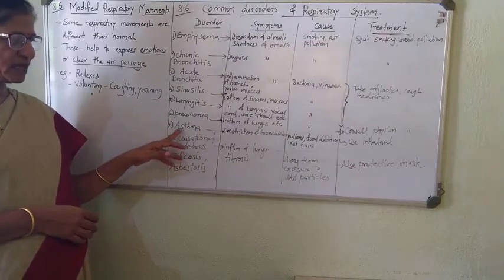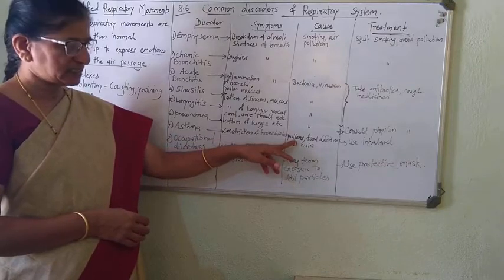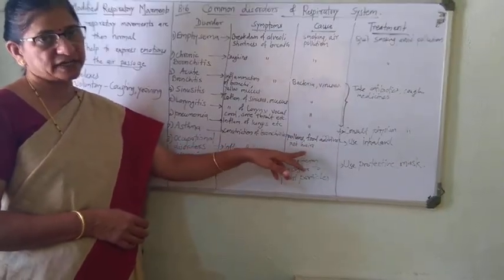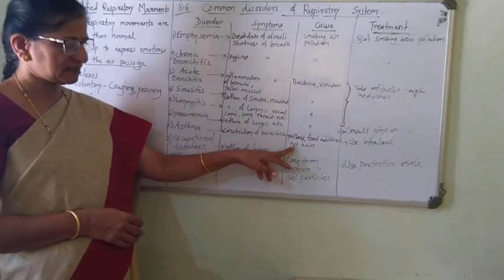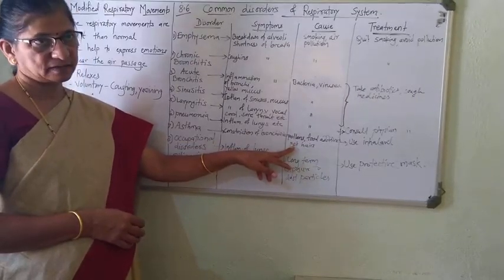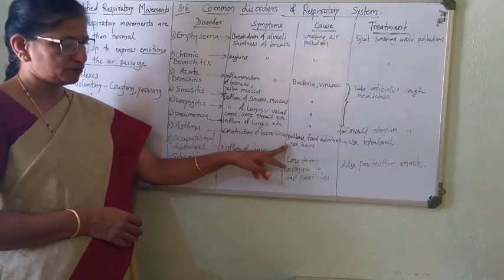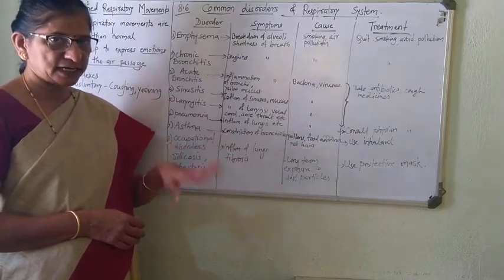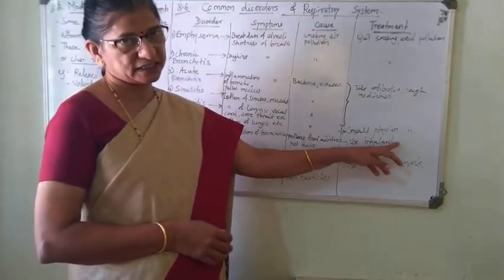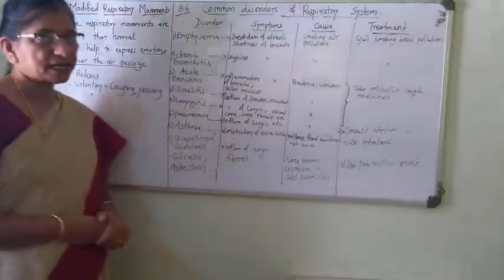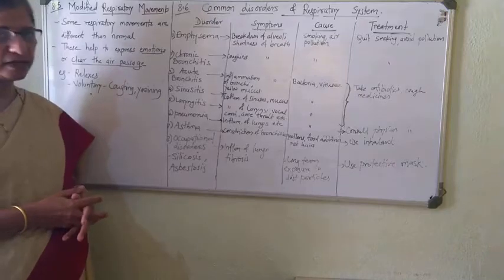Next is asthma, which means constriction of the bronchioles. Causes include pollen grains, food additives, or pet hairs — for example, cat or dog hair that falls in the house and gets inhaled into the respiratory system can trigger asthma. The treatment is to use inhalants, which is the pump inhaler you are familiar with for asthma.